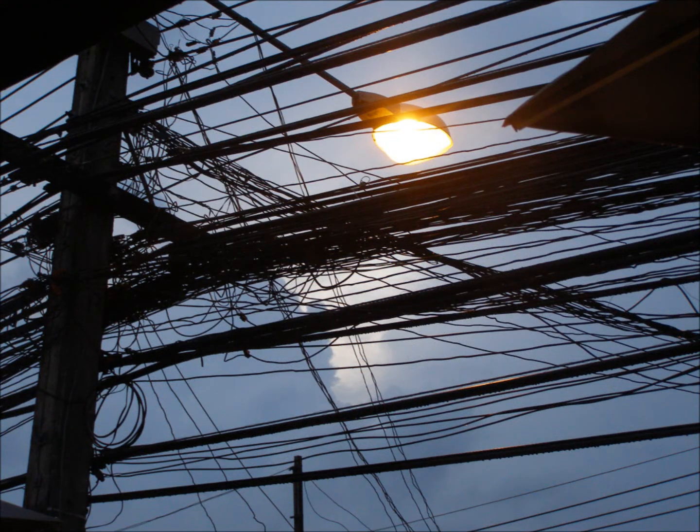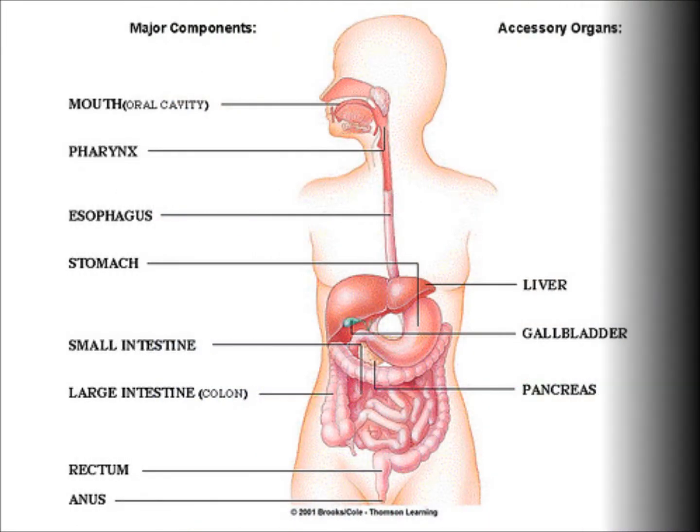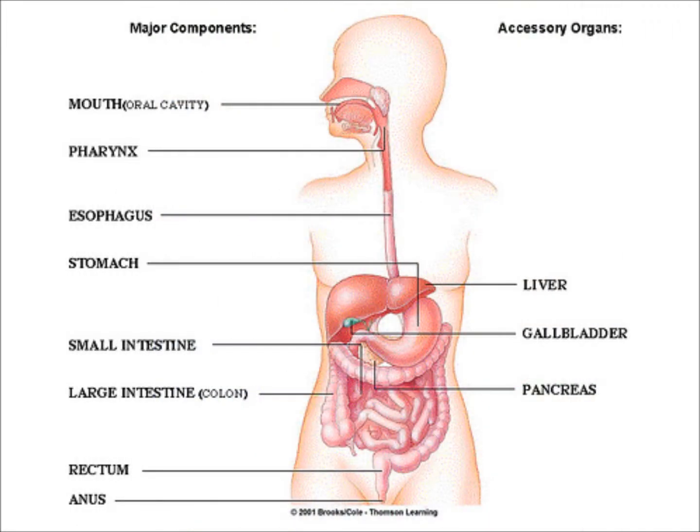When the power goes out, the electrical company identifies the problem and repairs it. The nervous system is somewhat like these wires, but who identifies the problems and makes repairs? We are often on our own and incapable of bringing about the necessary changes.